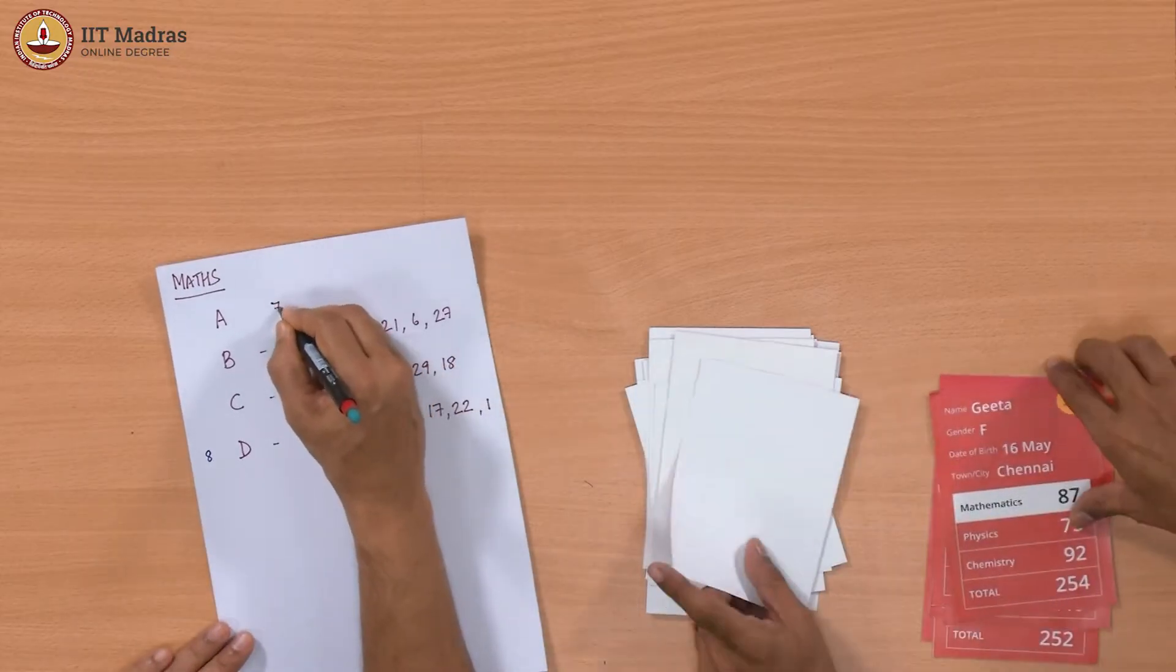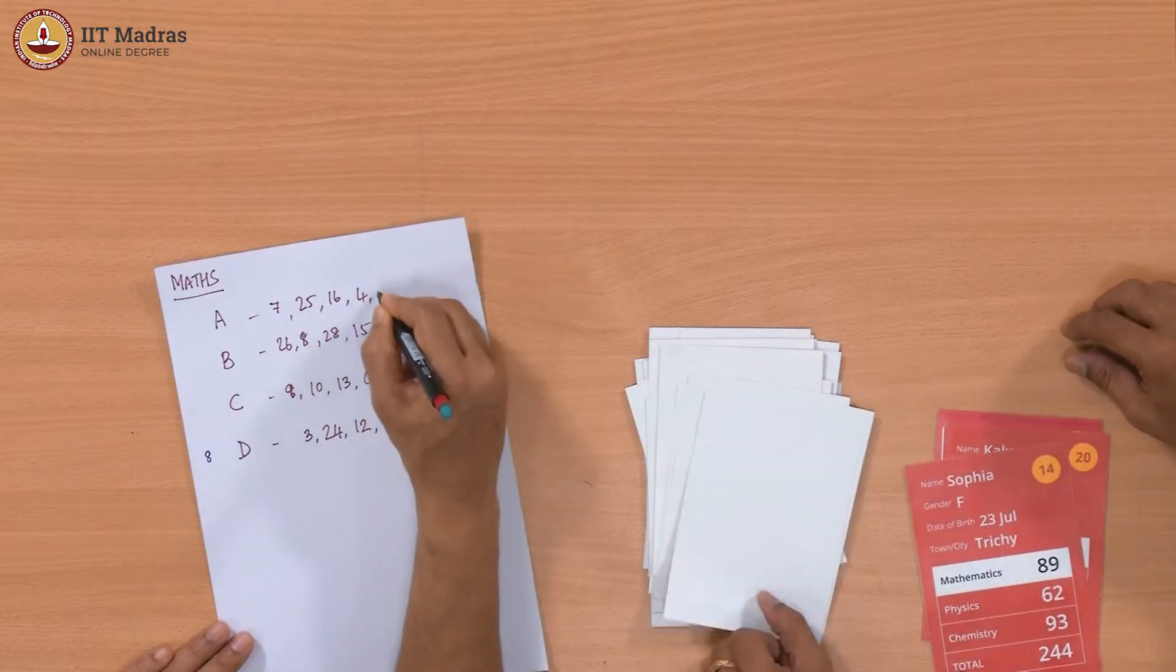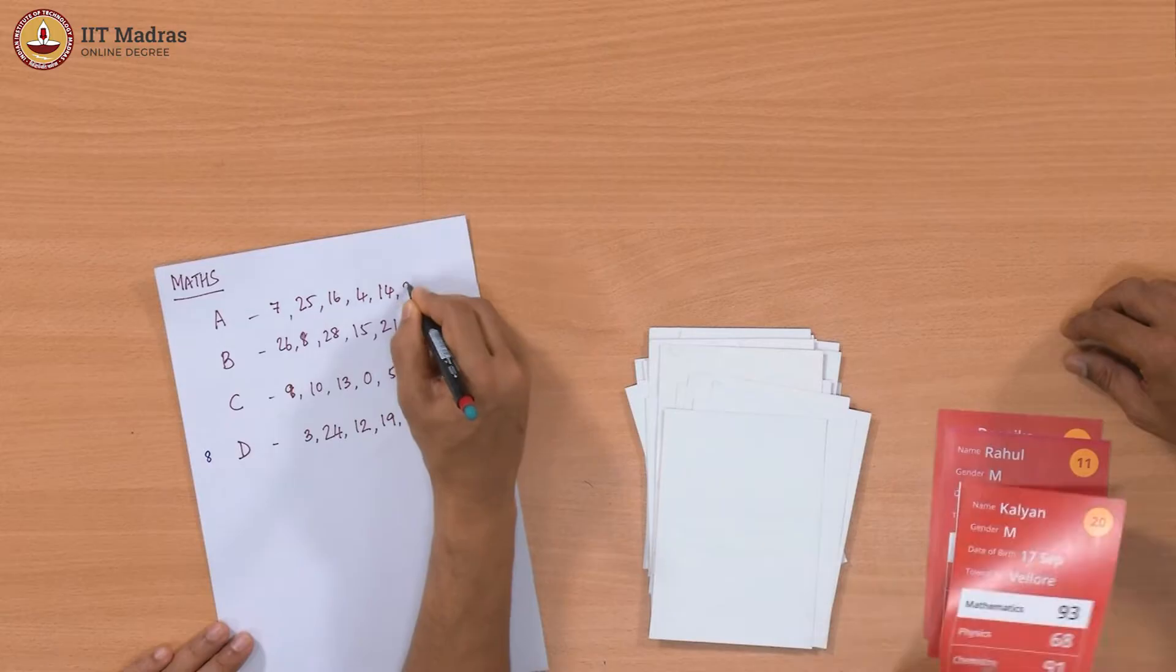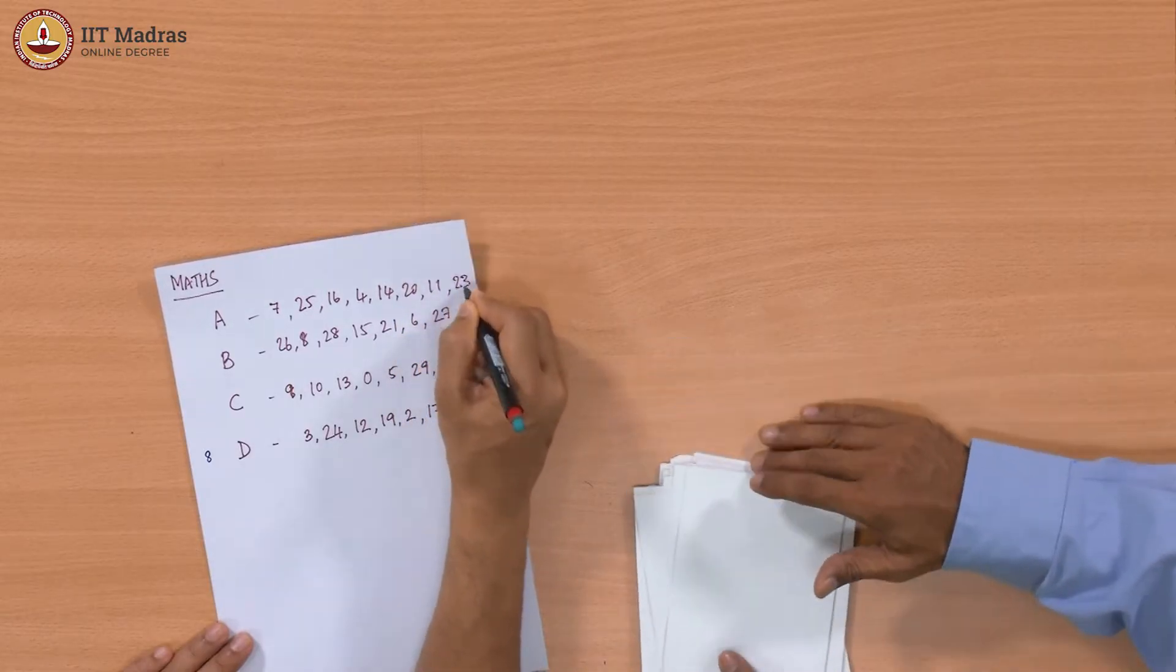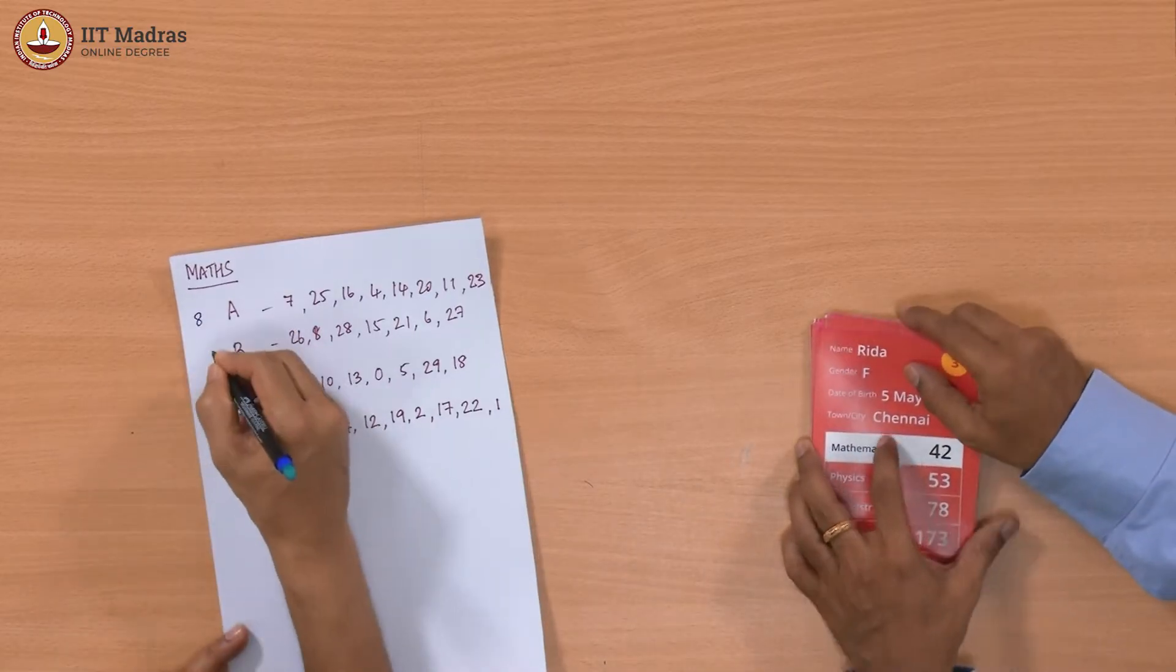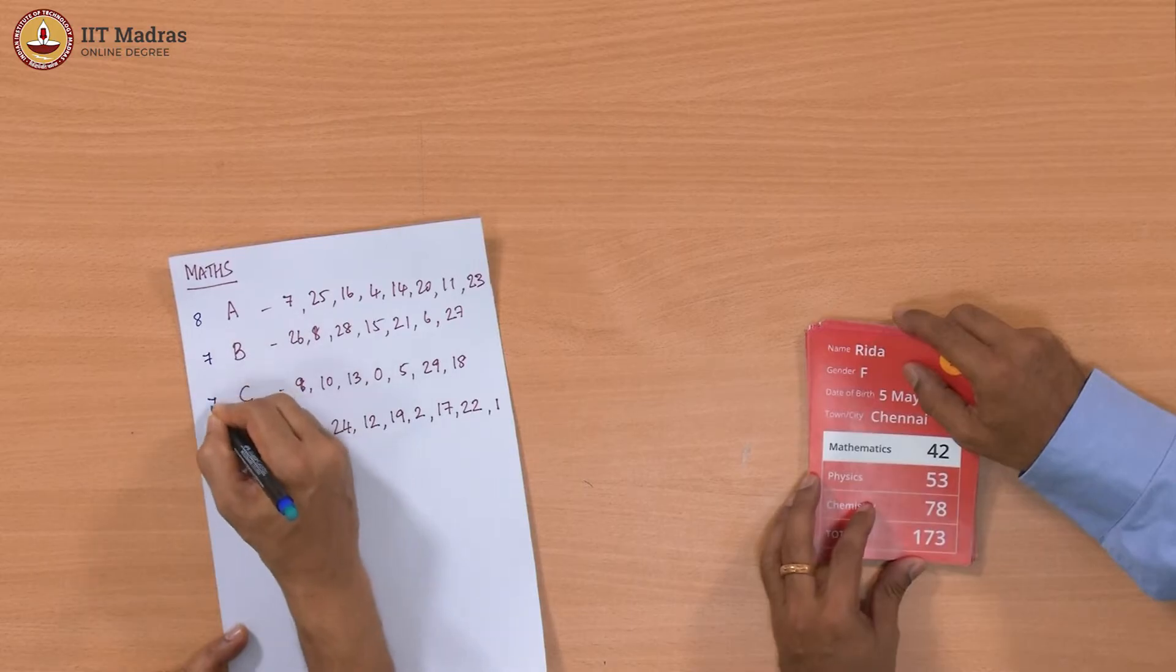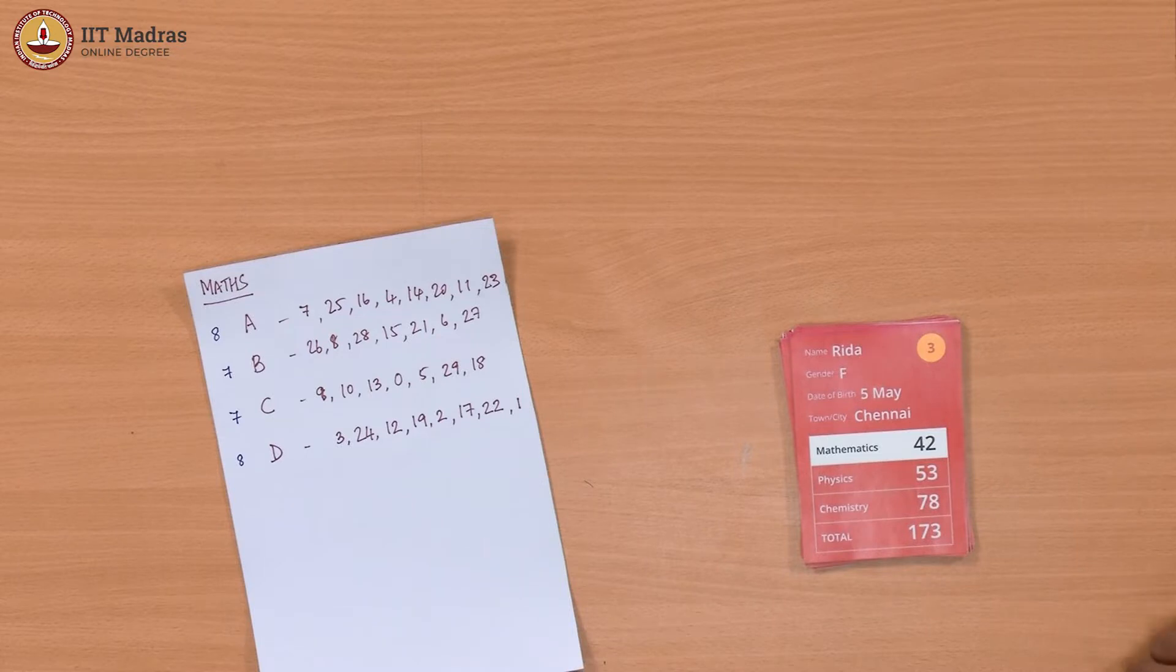Then the top 8 are going to be A's I hope. We will see. 7, 25, 16, 4, 14, 20, 11, 23. Did you got it? Yes. So we have essentially 8 A's, 7 B's, 7 C's and 8 D's. That is alright. I think this looks good. We have to anyway have, it cannot be same for 30 cards. So this is good. Now we want to do the same thing for physics.